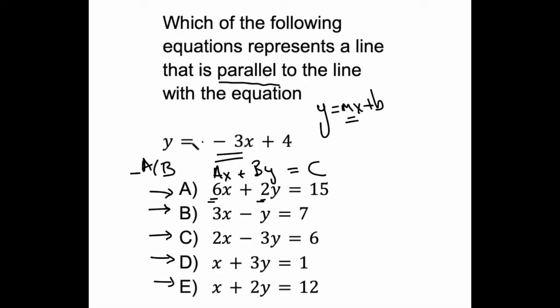So again, the slope of the line that we're interested in is negative 3. We want a line that's parallel. So we're just going to go negative a over b for all of these. And wouldn't you know at the very first one, right, negative 6 over 2 gives us negative 3. So that's the correct answer.